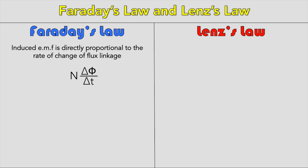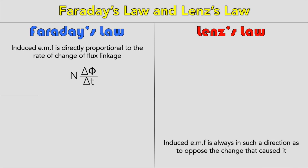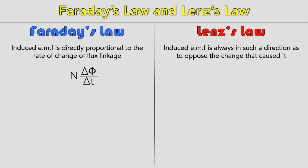The magnitude of the EMF is shown by the gradient of a flux linkage versus time graph. The area underneath will be the flux change. Lenz's law states that the induced EMF is always in such a direction as to oppose the change that caused it.